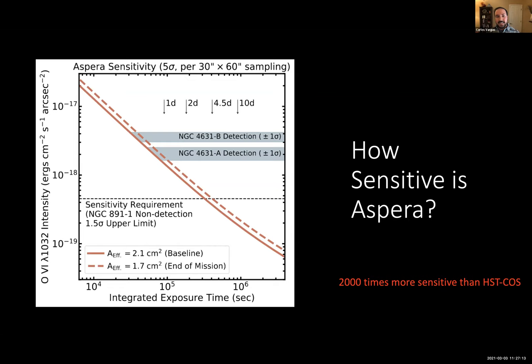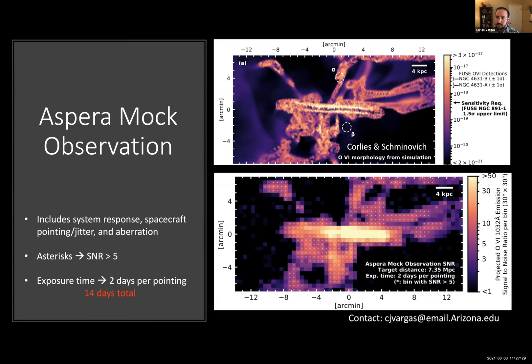Fun fact, so in our teeny tiny bandpass, so we kind of shave our bandpass to be very, very precise here for our specific targets. But within that, we are 2,000 times more sensitive than HST-COS. So to further motivate what we might actually measure and see, we took these simulations from Lauren Corlies and David Schiminovich from their 2016 study, shown in the upper right here, and ran this through our system response, spacecraft pointing and jitter estimates, and aberration to come up with a mock observation and to figure out how much time it would take to build that observation.